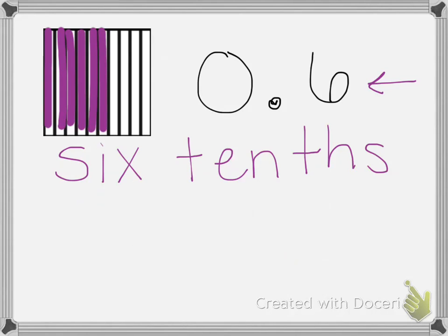So to write it as a fraction, our numerator is how many parts are shaded, or the number that's in our tenths place. So the numerator is 6. Our denominator is how many parts we've divided our whole into.